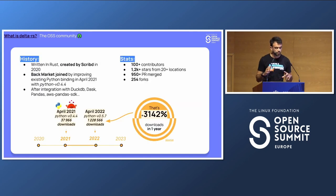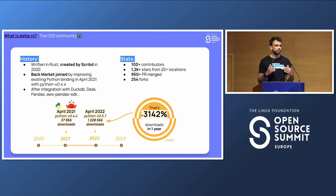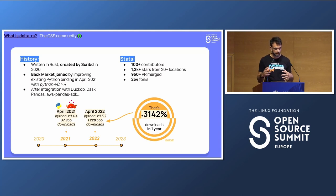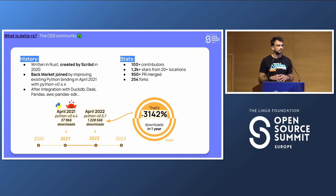A bit of history: Delta RS was written in Rust from the start, created by Scribd in 2020. Back Market then joined the open source efforts to improve the Python bindings. It was really important to have well-defined, well-documented Python bindings to improve connectivity with other libraries. Right after releasing the first version with improved Python bindings, we saw a significant increase in downloads on PyPI — many Python data processing tools integrated Delta RS via the Python bindings. We now have more than 100 contributors.